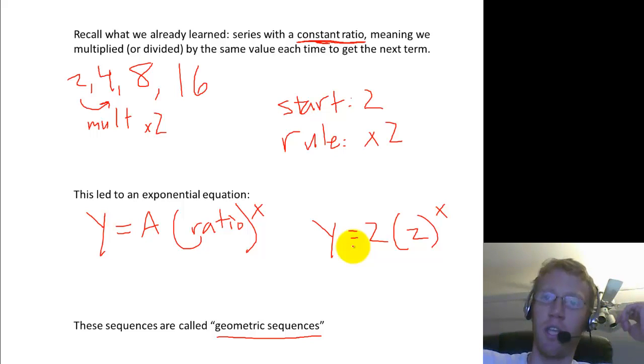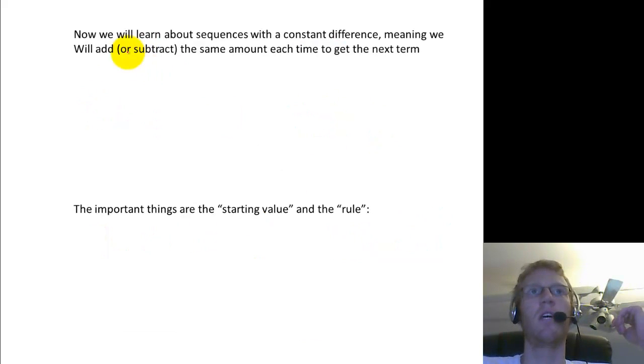So we're going to do something similar to that, but a little bit easier. So now we're going to learn about sequences again, but instead of a common ratio, they have a common difference. So instead of multiplying or dividing, you're going to add or subtract a certain amount each time.